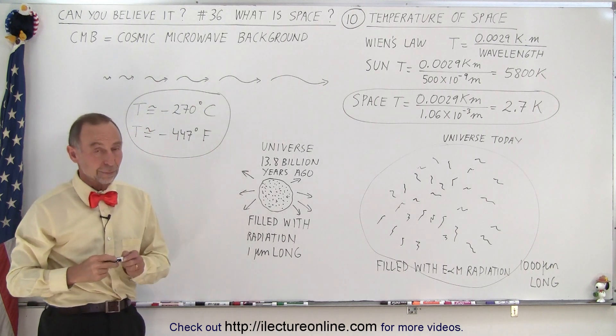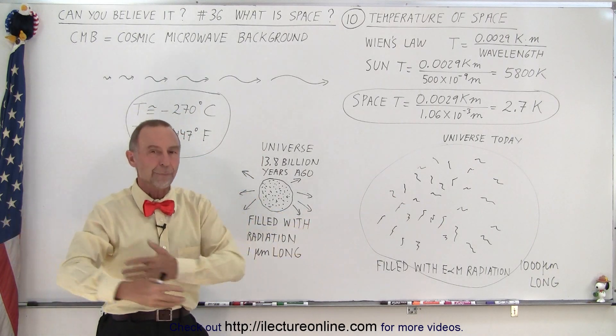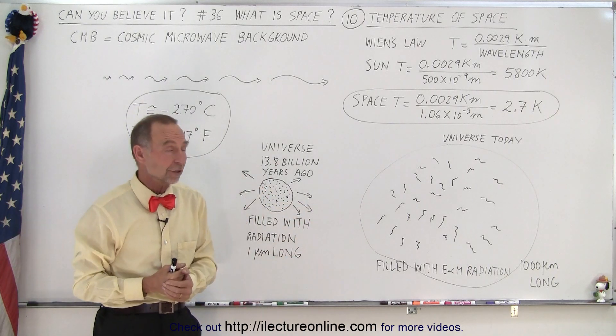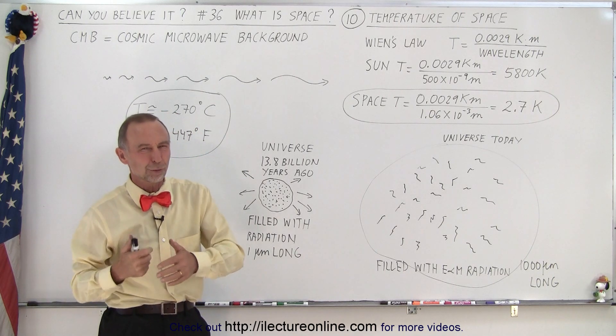Space is absolutely frigid, and the temperature of space is determined by the radiation within it, which is predominantly that background radiation that has been filling the universe for the last 13.8 billion years, and currently the temperature of the universe has dropped to about 2.7 Kelvin.